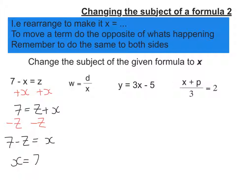Just rewriting this, I get 7 minus z. So x equals 7 minus z.